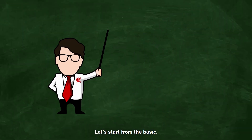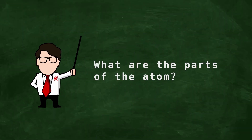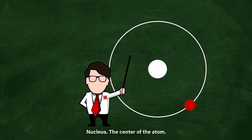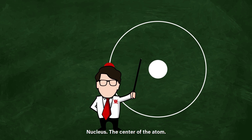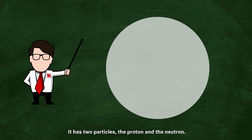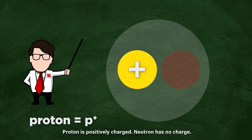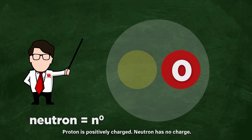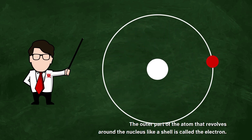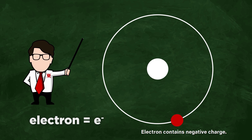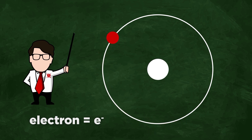Let's start from the basic — what are the parts of the atom? Nucleus: the center of the atom. It has two particles — the proton and the neutron. The proton is positively charged. The neutron has no charge. The outer part of the atom that revolves around the nucleus like a shell is called the electron. The electron contains a negative charge.